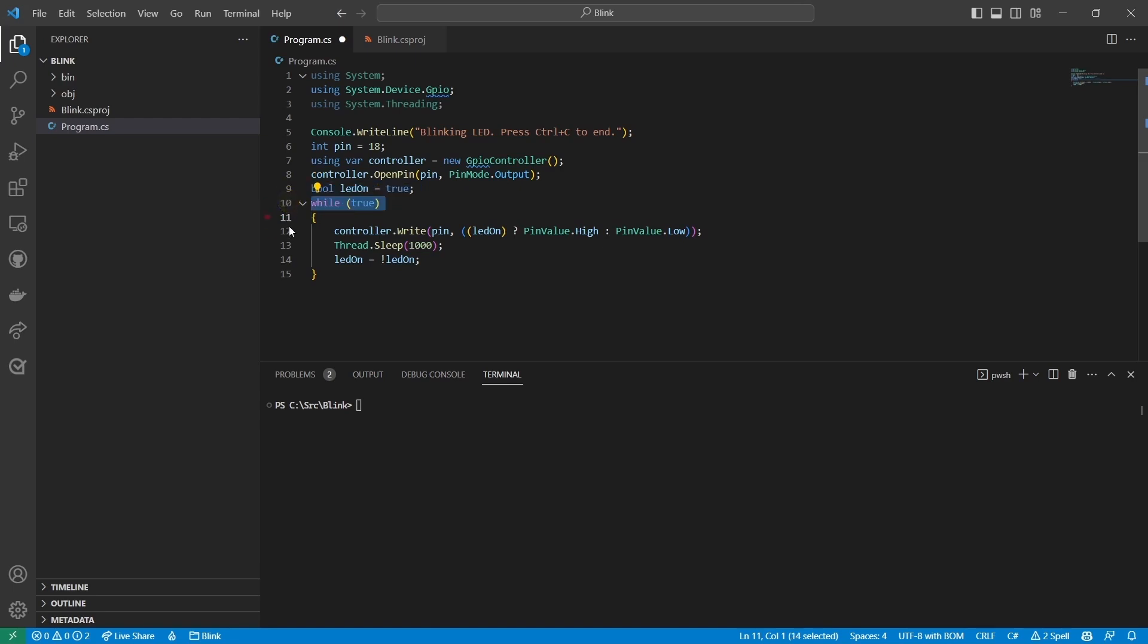Finally, I'm using a while loop to turn the LED on and off. The loop uses a ternary expression to set the LED state based on the value of LEDOn. The PinValue.High and .Low values written to the pin correspond to on and off. Then it waits for 1000 milliseconds, and finally it inverts the value of LEDOn. The loop runs indefinitely.